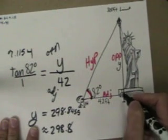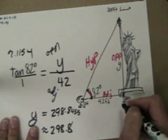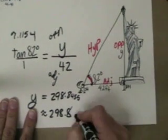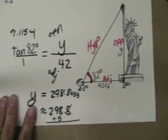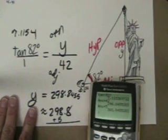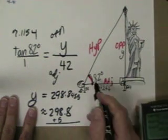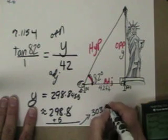Now, that's y. That's this distance right here, but this horizon line here is just five feet off the ground, so we need to take this and add five to it. Don't have enough room on the bottom here, but plus five equals 303.8, roughly. So this equals about 303.8.